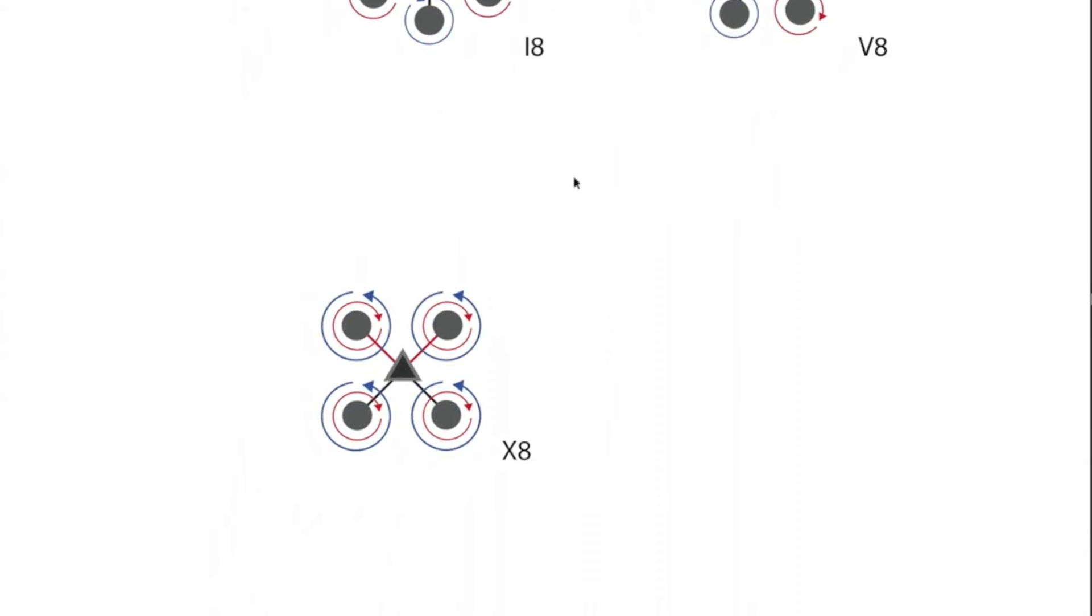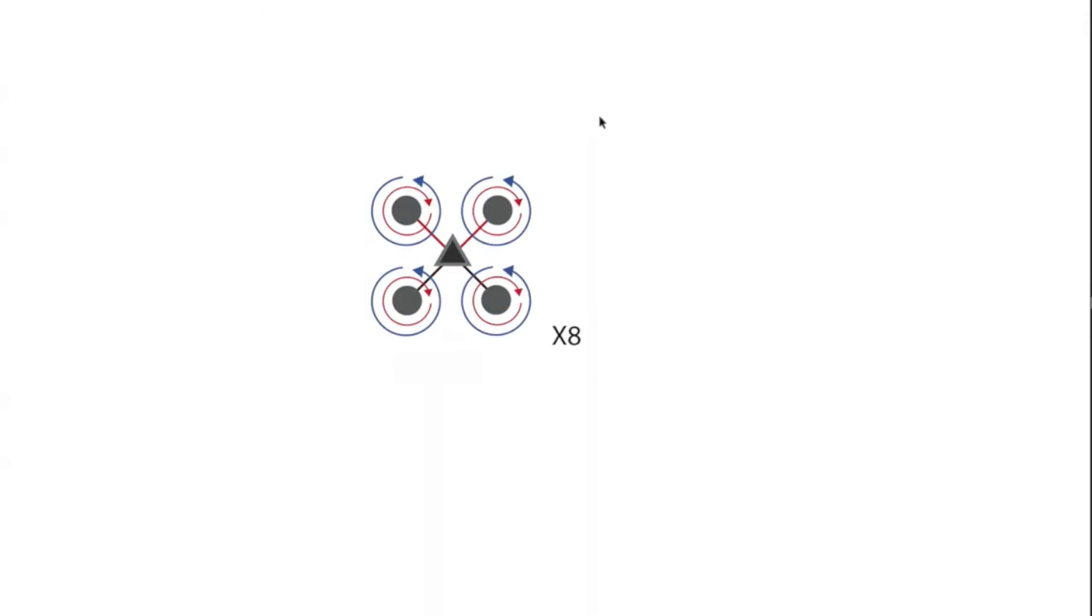And finally, we have the X8 configuration, so just like the hexcopters, you can make a coaxial version, two motors per boom, four booms, that's eight motors in total for the X8.